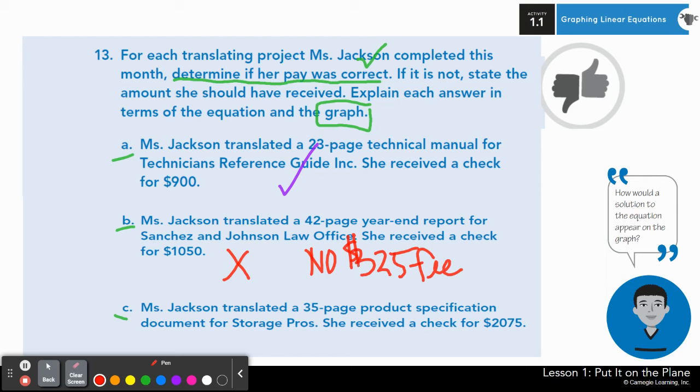And for C, again, this check was not correct. She received too much money. For 35 pages, she only should have received about $1,200. If you don't have these answers, go ahead and quickly copy.